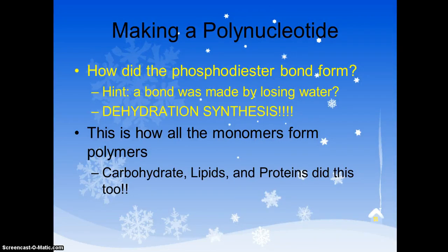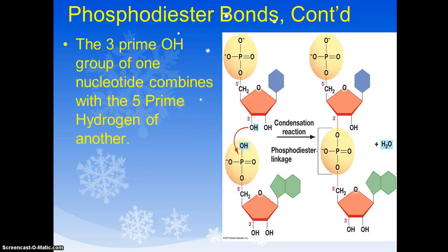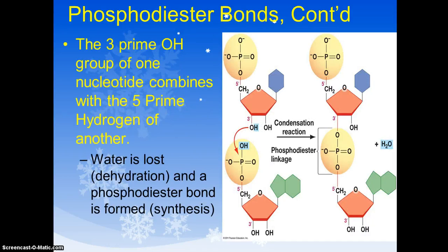Everything we just said here. How did the phosphodiester bond form? Dehydration synthesis. This is how all the monomers form. The carbs, the lipids, the proteins, they all did dehydration synthesis. And they all had their own names for their bonds. But for the nucleotides, it's called a phosphodiester bond because a phosphate group is involved.